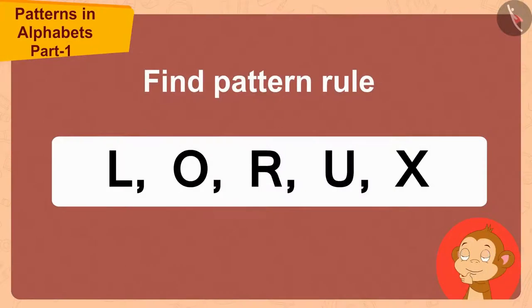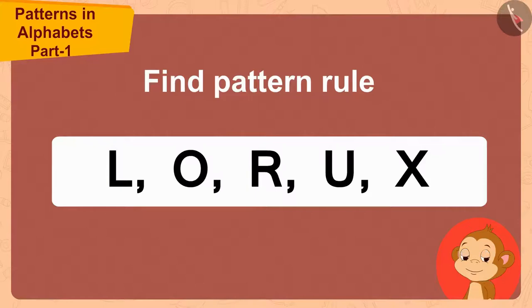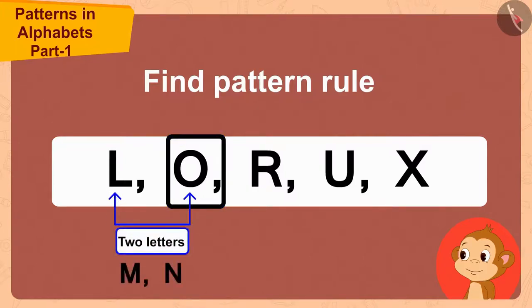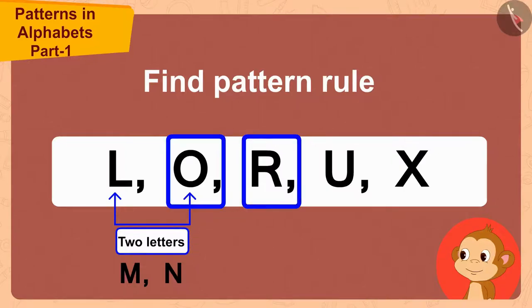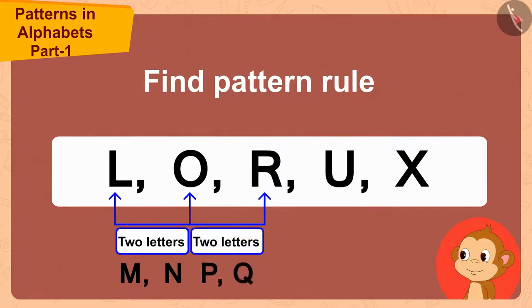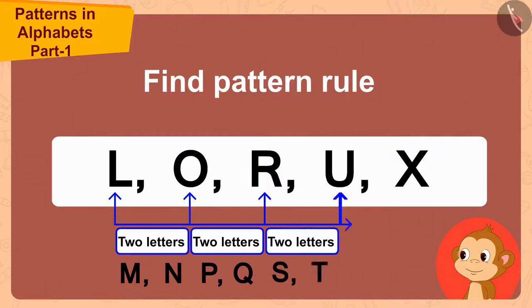The first letter of this pattern is L and the second letter is O. The difference between L and O is two letters. And how many letters difference is there between O and R? Exactly two letters. Thus, the rule of this pattern is: the difference of two letters between each letter and the letter preceding it.